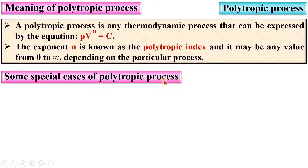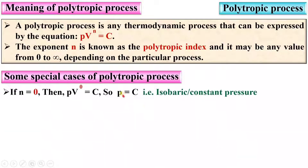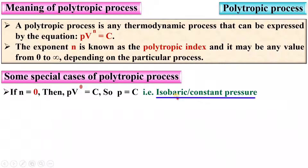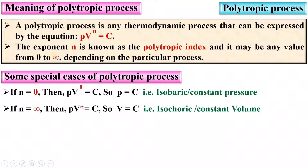Now let us see some special cases of the polytropic process. If you put n equal to 0 in this equation, it will be PV raised to 0 equals constant, and since V raised to 0 equals 1, it becomes P equals constant — that is the constant pressure or isobaric process. Next, if you put n equal to infinite, PV raised to infinite equals constant, and V is dominated, so V equals constant — that is the isochoric or constant volume process.